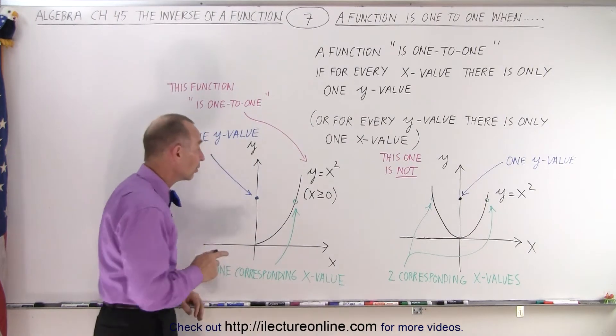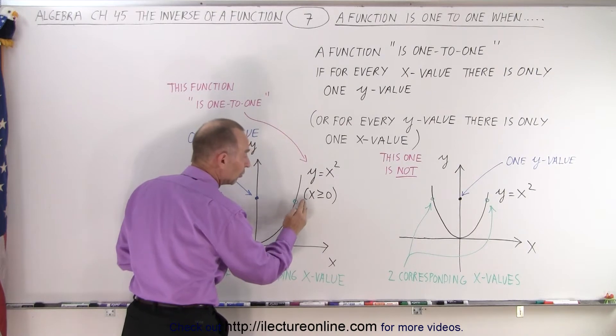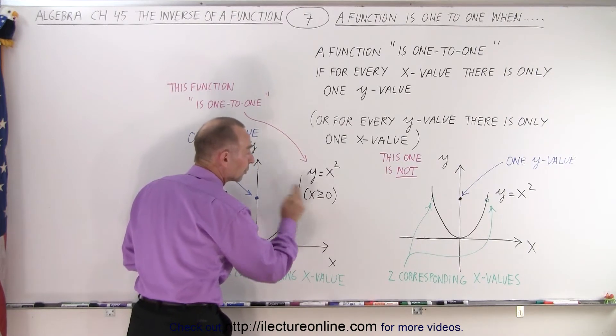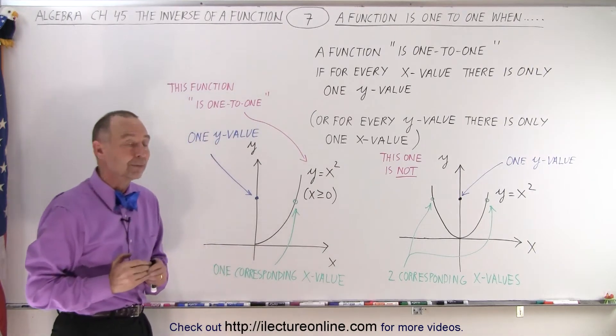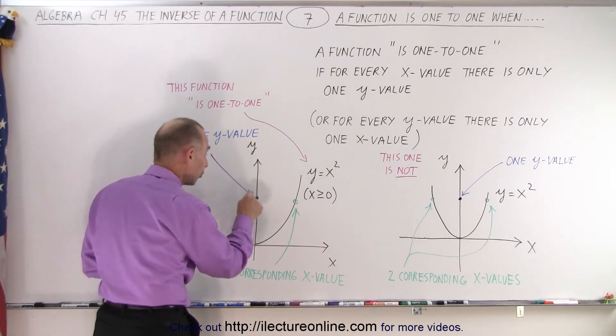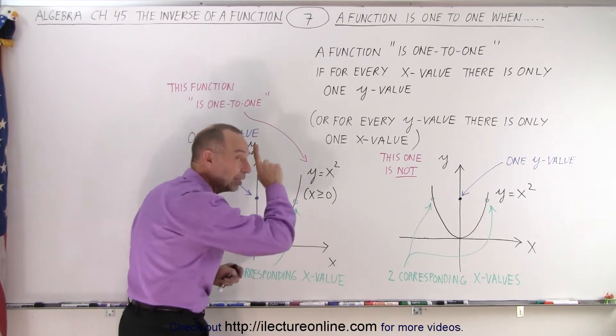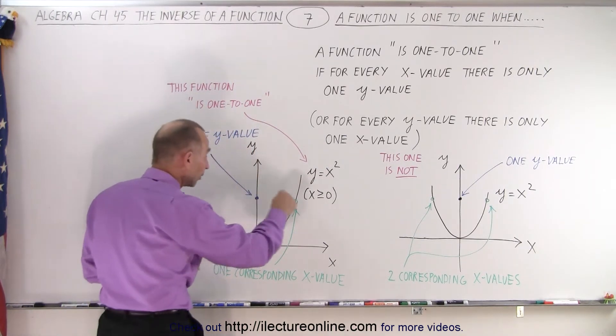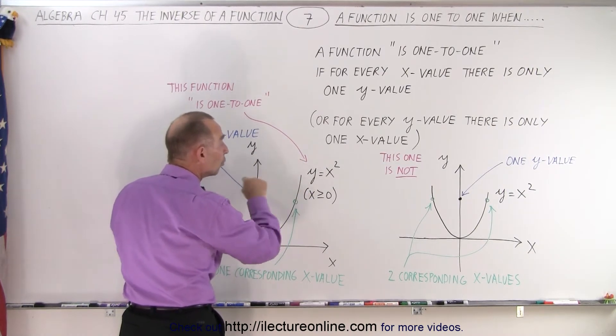Now, let's take a look over here. Here we have y equals x squared, the same function, but now we're limiting ourselves to values for x that are greater than or equal to zero. So just the right half of the parabola. Now, for any particular value for y, there's only one specific value, one only, for x. And therefore, there's a one-to-one correspondence. For every y, there's an x. For every x, there's a y. One-to-one.